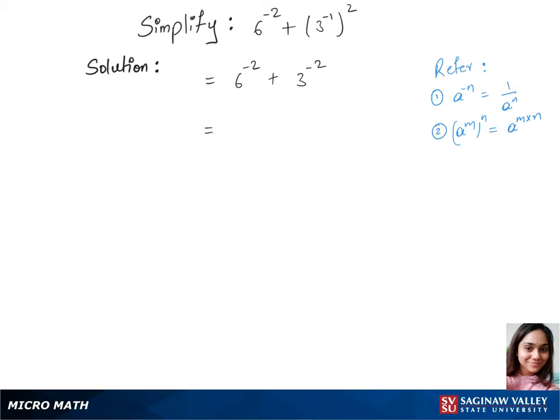So that's 3^(-2). In our next step we have 1 over 6^2, which uses rule 1 for that, plus 1 over 3^2, the same rule.